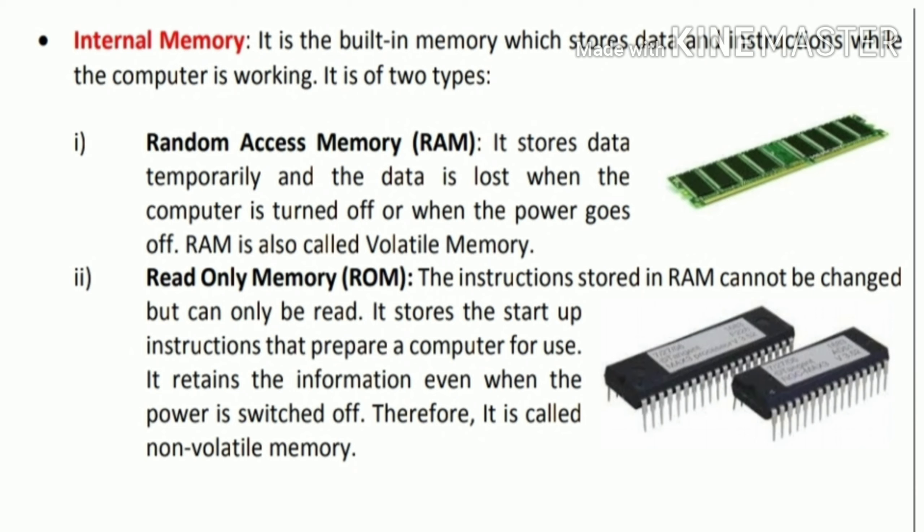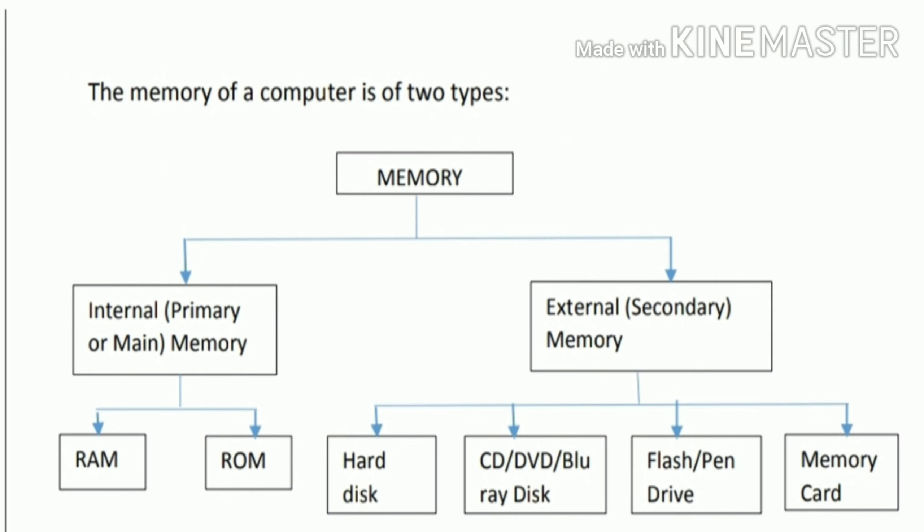In our next class, we will be learning about the secondary memory system, which includes the hard disk, flash cards, pen drives, and so on. Today we discussed what memory is and what internal, primary, or main memory is — which is RAM and ROM. Tomorrow we will be learning about external secondary memory and its different types. Thank you and have a great day.